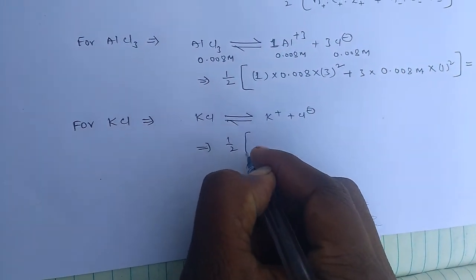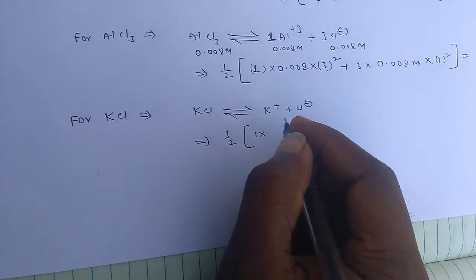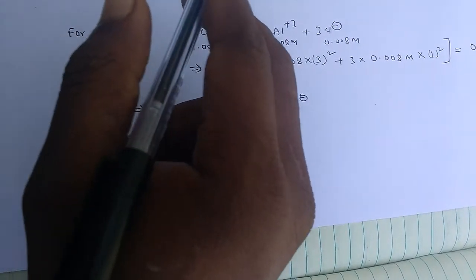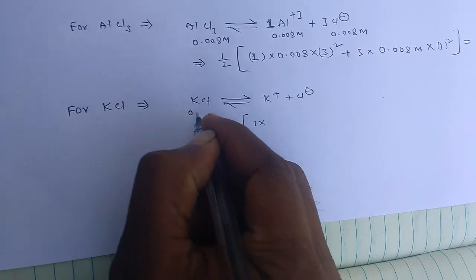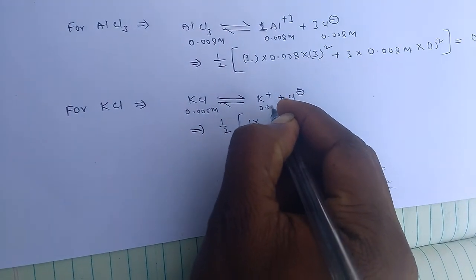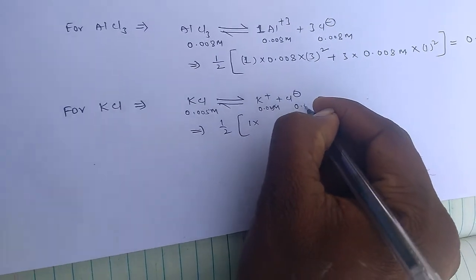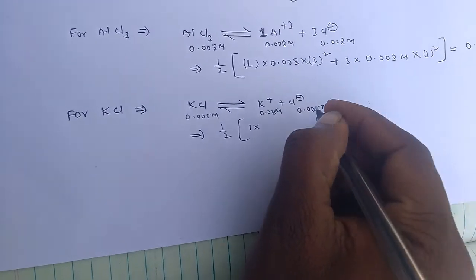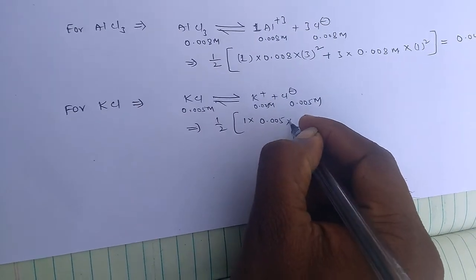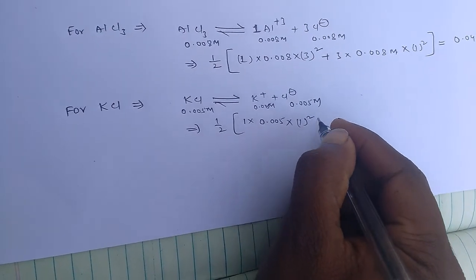Half into number of cations, only 1. So 1 into KCl concentration is 0.005 M, and that should be with cations and anions. So 0.005 into valency of cation is only 1, so 1 square plus